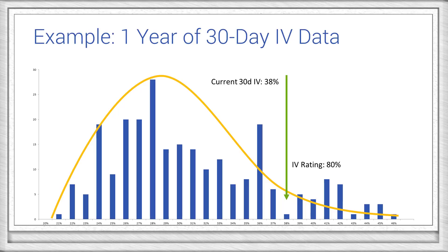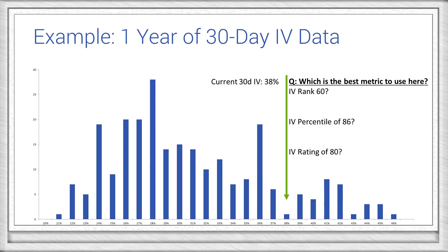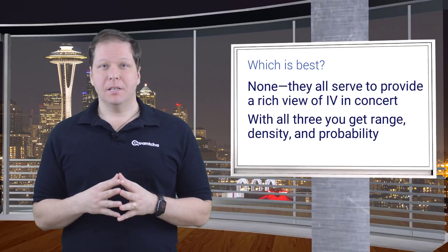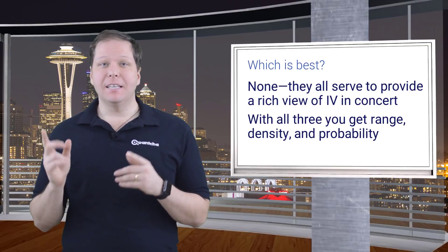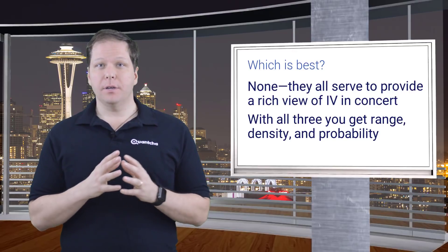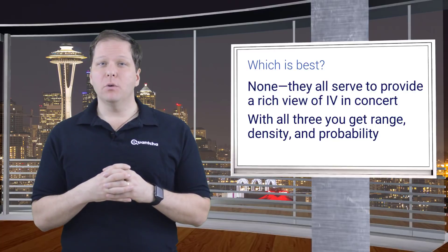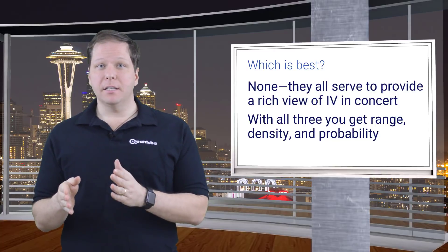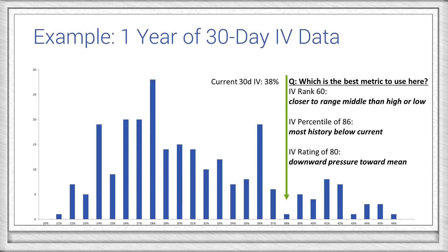So this leads to an obvious question: which is the best metric to use? The simple answer is none. Each of these metrics articulates a different aspect of volatility history, so they can be used in concert to model a view that covers range, density, and probability. The IV rank of 60 tells you that the current volatility is slightly above the middle of the historical range. The IV percentile of 86 tells you that most historical readings are below the current value. And finally, the IV rating of 80 tells you that there is significant downward pressure on the volatility in the short term.